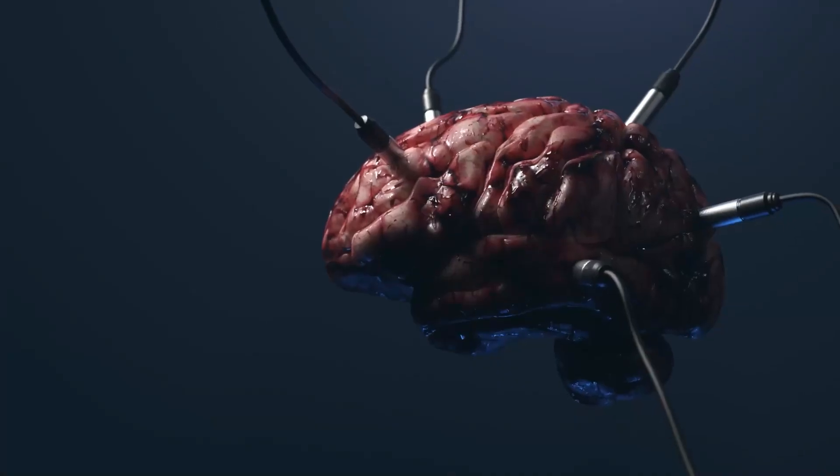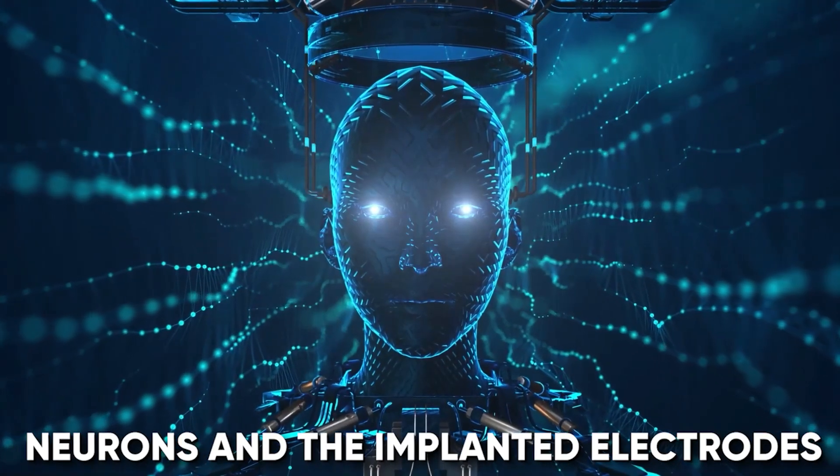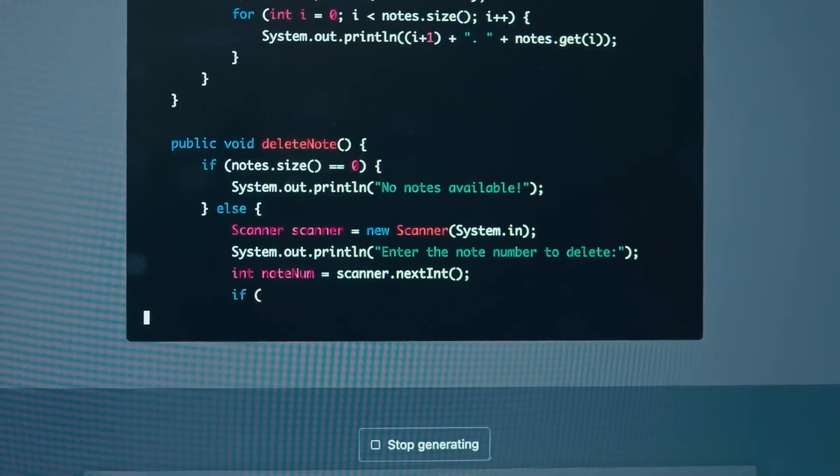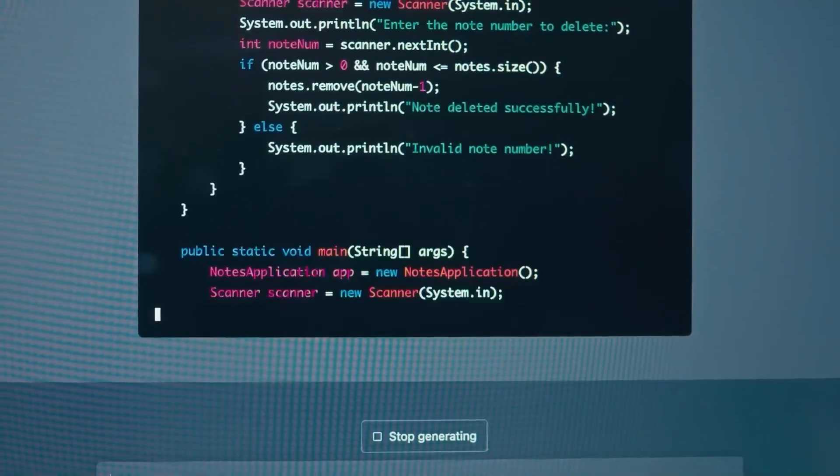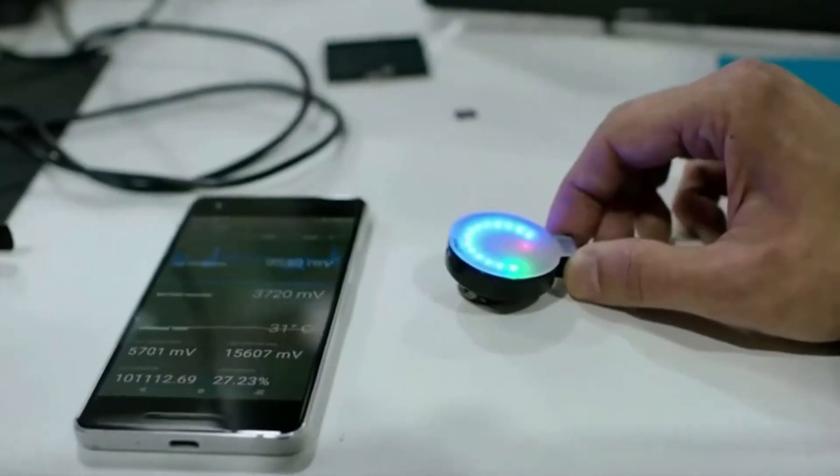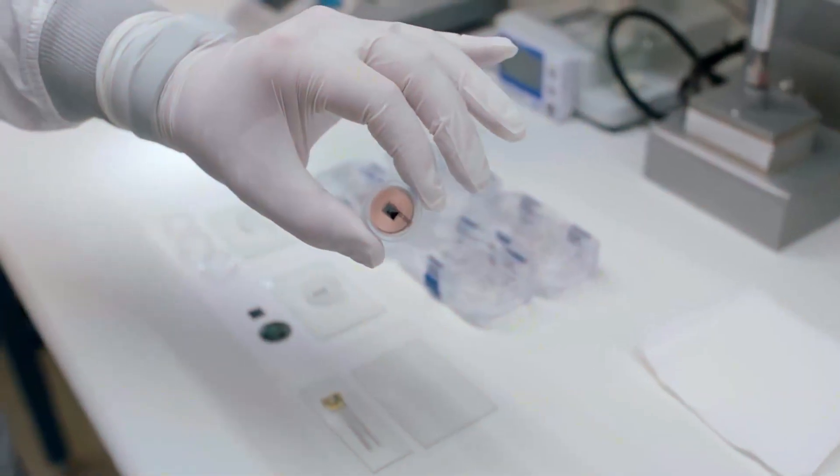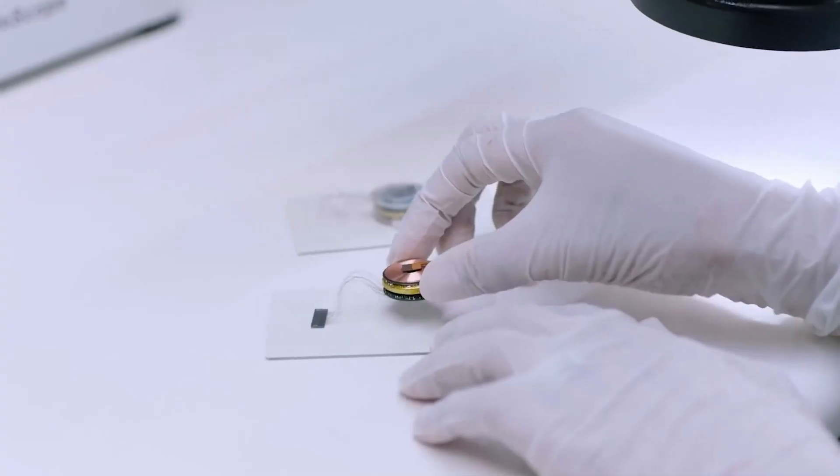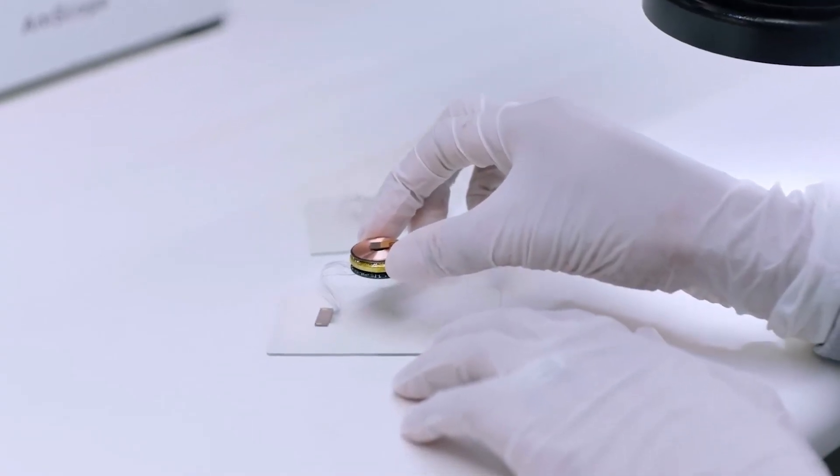Experiments involve studying the interactions between neurons and the implanted electrodes, optimizing signal processing algorithms, and fine-tuning the interface to achieve greater precision and reliability. The lab serves as a crucible of innovation, where ideas are tested, theories are challenged, and breakthroughs are made.